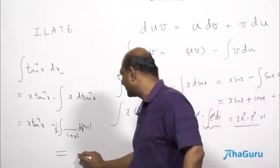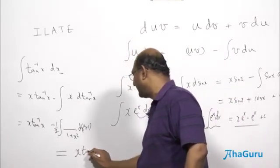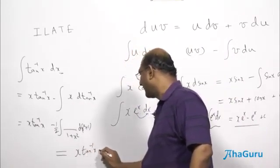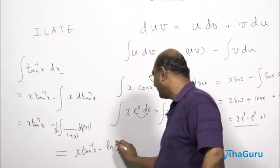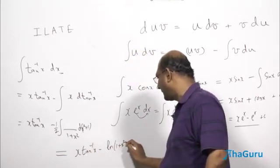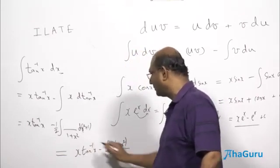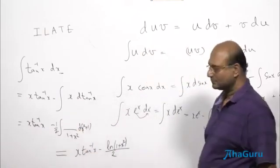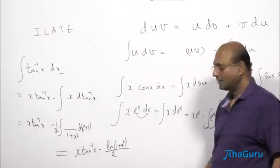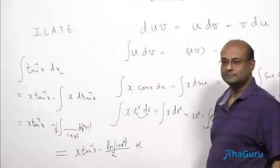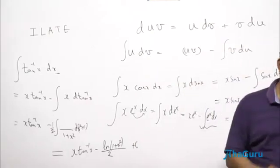So the answer to this question is X tan inverse X minus ln of 1 plus X square by 2, half of it. The half is for the log. Plus constant C. Is the idea clear?